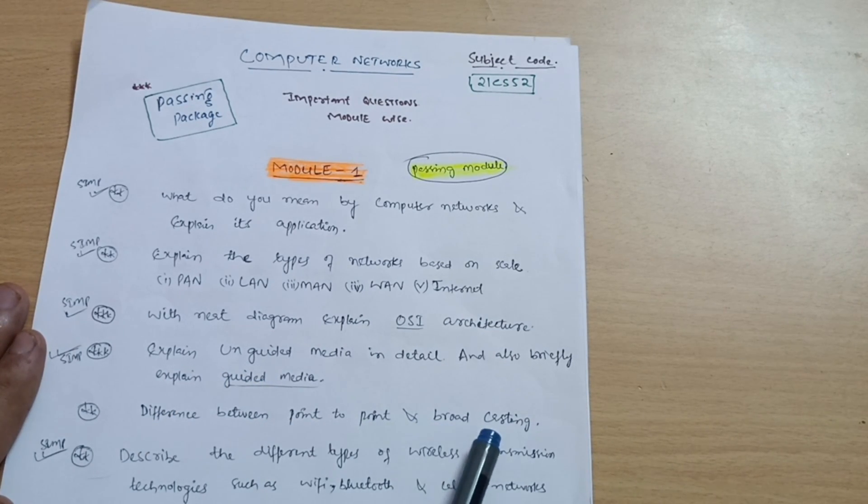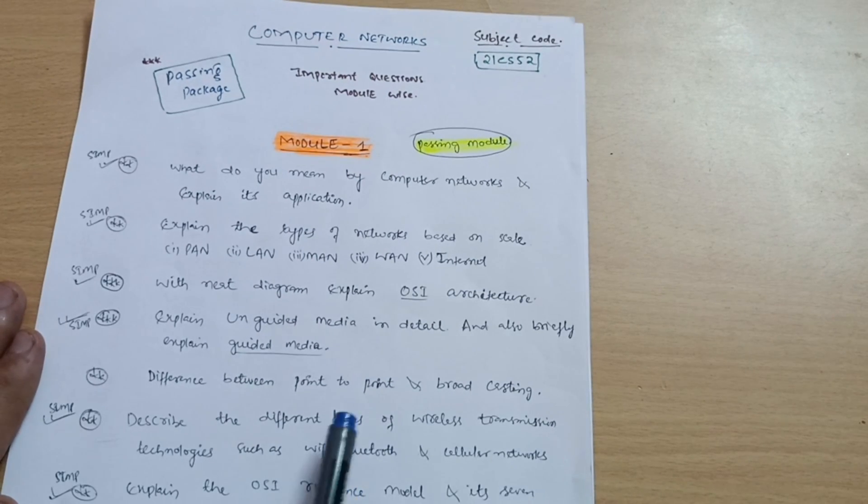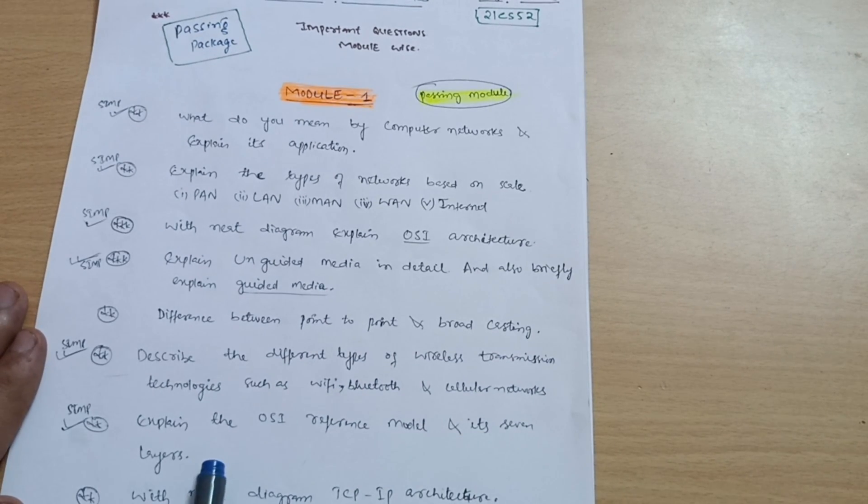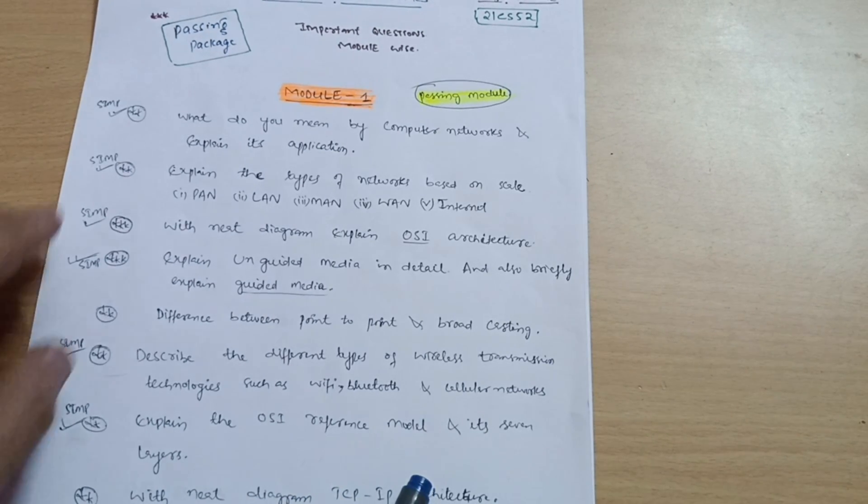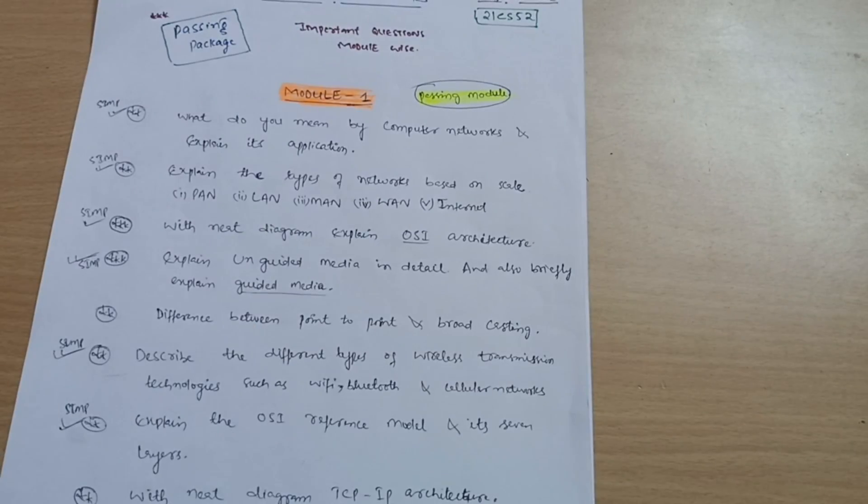point-to-point and broadcasting. Describe the different types of wireless transmission technologies such as Wi-Fi, Bluetooth and cellular networks. Explain the OSI reference model and its seven layers, and with a neat diagram, TCP/IP architecture. This is all about Module 1 - you have to cover these super important questions.